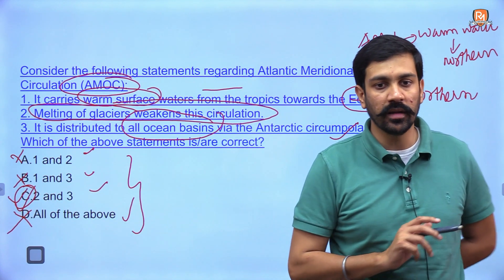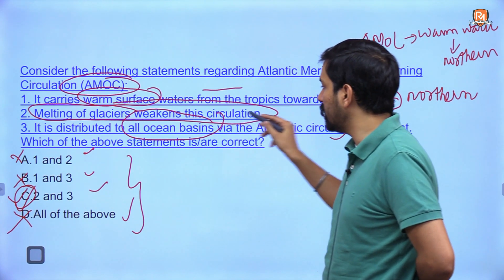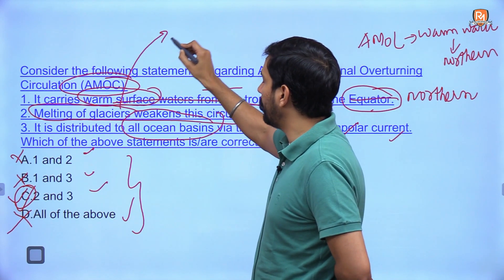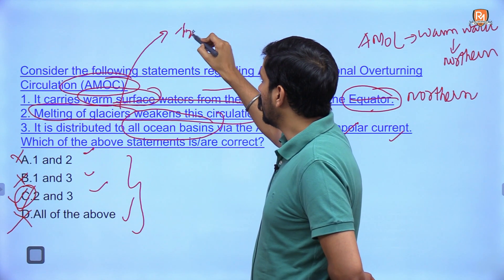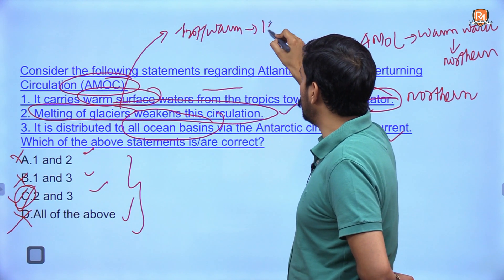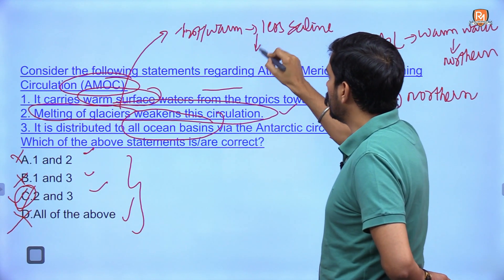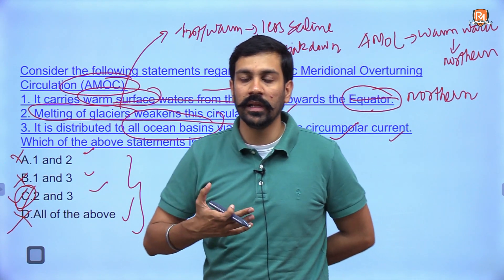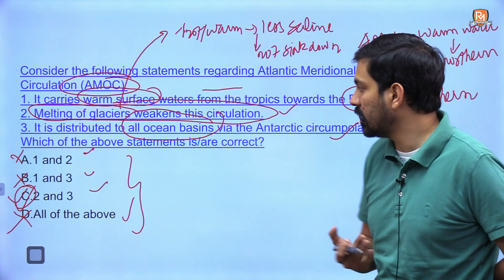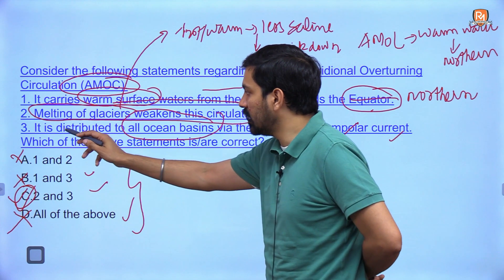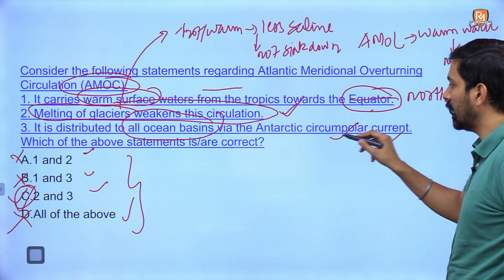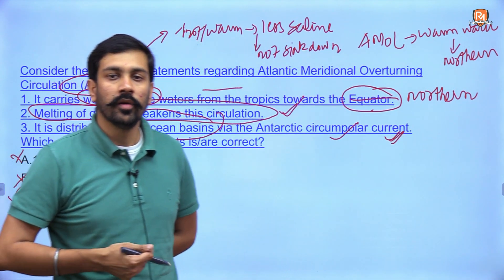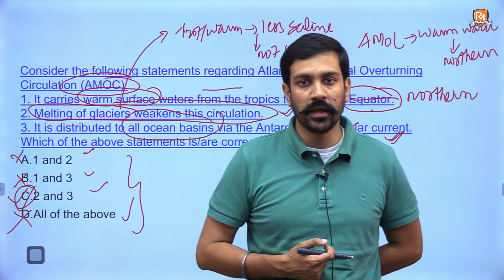With option one eliminated, options A, B, and D are also eliminated, leaving only option C — statements two and three. Statement two is correct: melting glaciers make water less saline and warm, so it won't sink, weakening ocean circulation. Statement three is also correct: distribution to all ocean basins via the Antarctic Circumpolar Current was confirmed in our discussion. So the correct answer is option C — two and three. That is all for today, thank you very much.